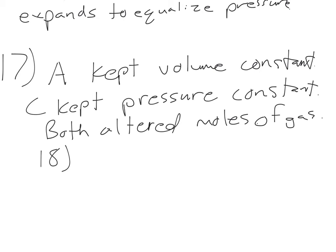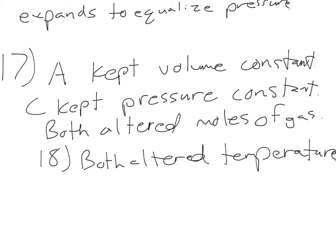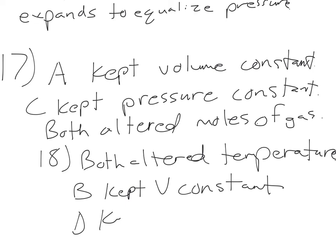Question 18: compare experiment B with experiment D. Both altered temperature as the independent variable. The difference is that B kept volume constant (non-flexible container) and D kept pressure constant (flexible container) — just like A and C, B and D are in non-flexible and flexible containers respectively, so B always has constant volume and D always has constant pressure.